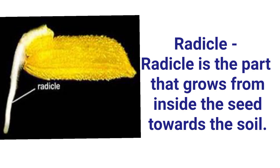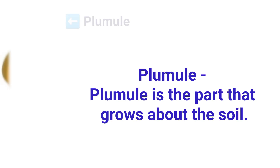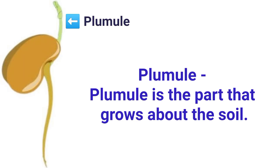Roots grow under the soil. Plumule is the part that grows above the soil. As the seed germinates, it forms the future shoot system.